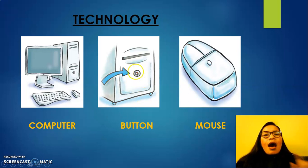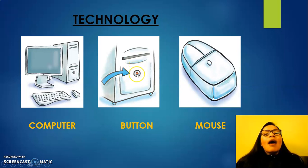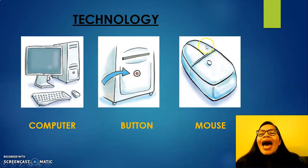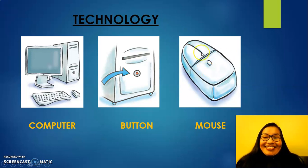Another vocabulary. Button. Look at this — button. Another vocabulary: Mouse. We touch the mouse all the time. Let's continue.